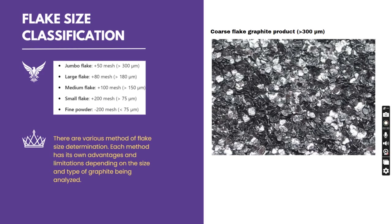More than 75 microns will always be plus 200 mesh. Medium flake size is categorized as a range of 150 to 180 microns, that is more than 100 mesh. 80 mesh means it is generally about 180 microns, and jumbo flakes means more than 300 microns. This is easy to remember in microns because in the metric system you can directly visualize it.